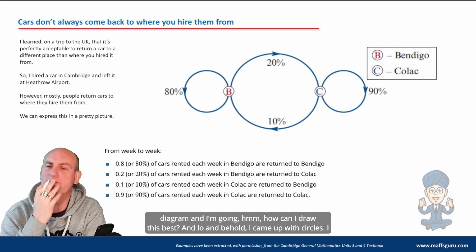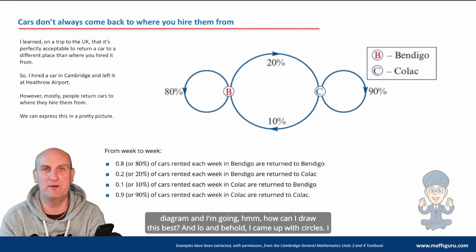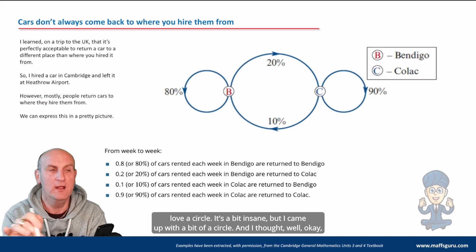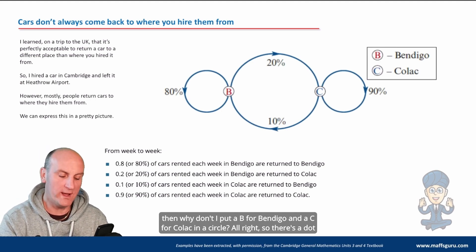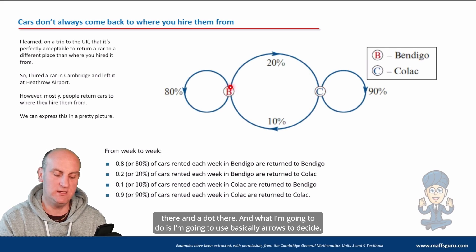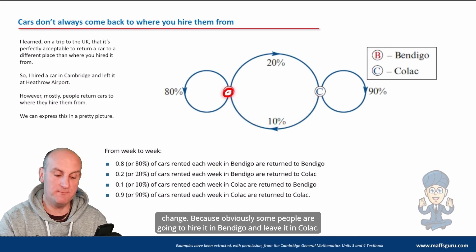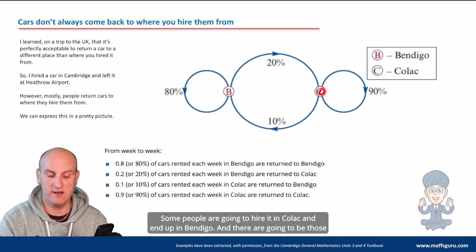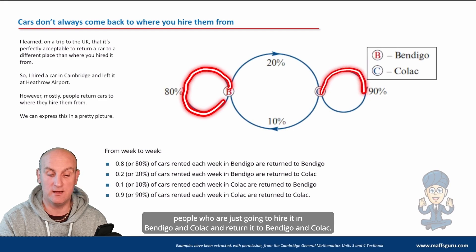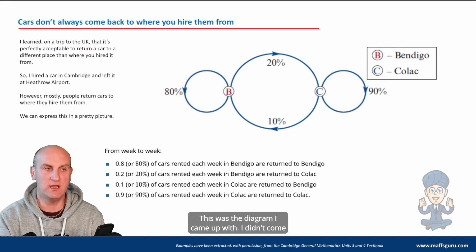And I was sitting there trying to draw a diagram and I'm going, how can I draw this best? And lo and behold, I came up with circles. I love a circle. It's a bit like insane, but I came up with a bit of a circle. And I thought, well, okay, then why don't I put a B for Bendigo and a C for Colac in a circle? All right. So there's a dot there and a dot there. And what I'm going to do is I'm going to use basically arrows to decide what percentages of my cars are going to stay where they are and which are going to change. Because obviously some people are going to hire it in Bendigo and leave it in Colac. Some people are going to hire it in Colac and end up in Bendigo. And there are going to be those people who are just going to hire it in Bendigo and Colac and return it to Bendigo and Colac. So this was the diagram I came up with.